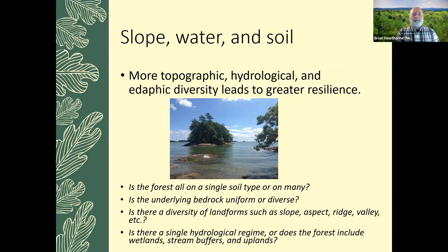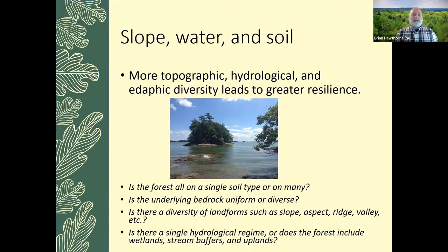Is there a diversity of landforms? In other words, is your forest all the same slope, or do you have hills and slopes in different directions? The aspect is the direction that the slope faces — east-facing slopes get more morning sun; north-facing slopes will be more shaded and cooler. Having a diversity of landforms leads to greater resilience and greater use by wildlife. And finally, is there a single hydrological regime? In other words, is your forest entirely dry, or are there also wetlands? Do you have streams through your forest or is it just uplands?